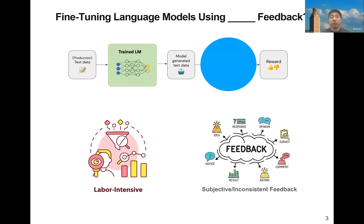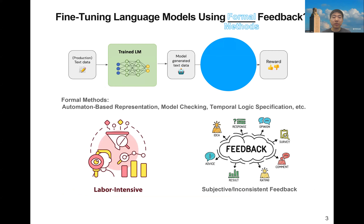We are proposing a method that uses formal methods to replace human feedback. The formal method uses an automaton-based representation and model checking to verify against linear temporal logic specifications. This reduces labor intensity because formal methods provide automated feedback, so we don't need humans to label scores. It also avoids the inconsistent feedback problem due to the nature of formal methods.